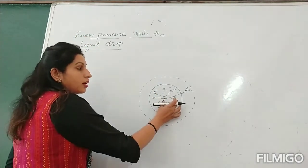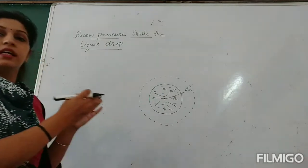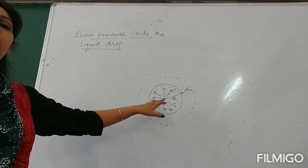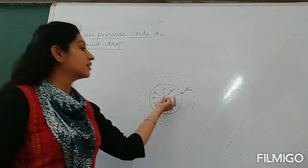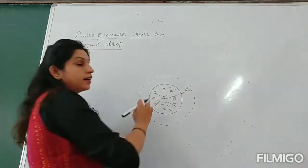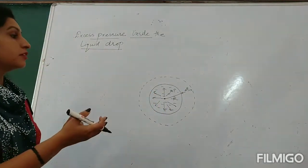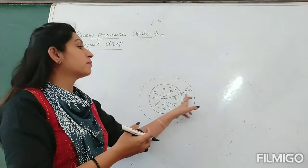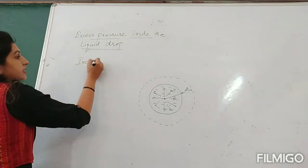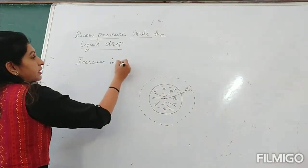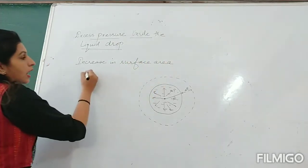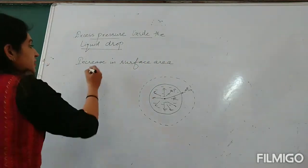Initially its radius was capital R, so its initial surface area was 4πR². Finally its radius is R plus delta r, so the final surface area will be 4π(R + δr)². The increase in surface area is final surface area minus initial surface area. How can we calculate the increase in surface area?